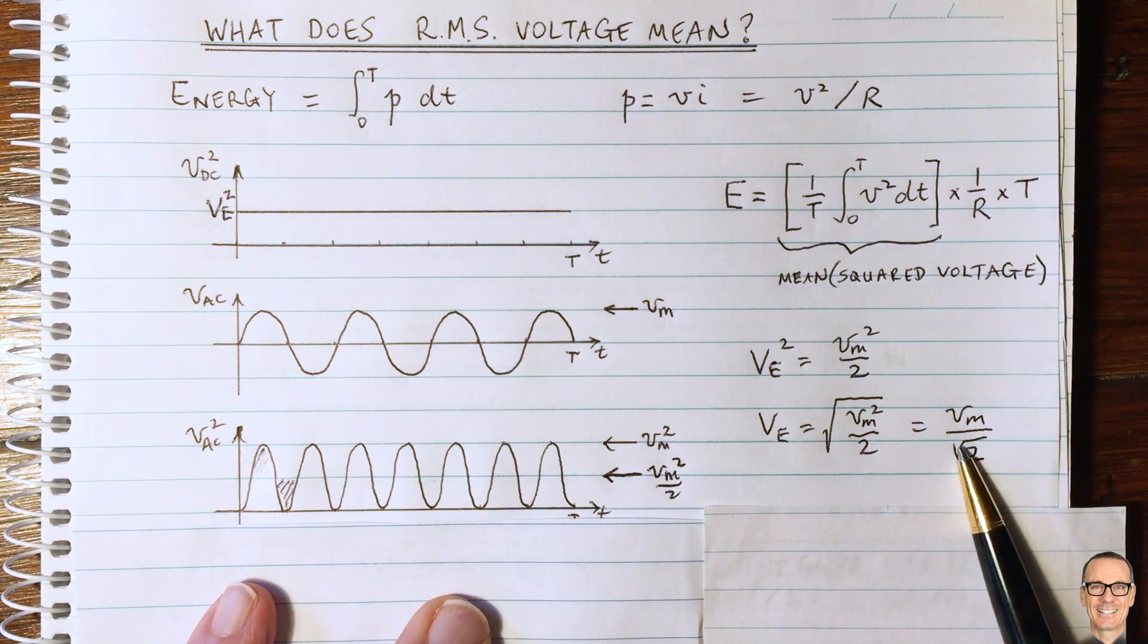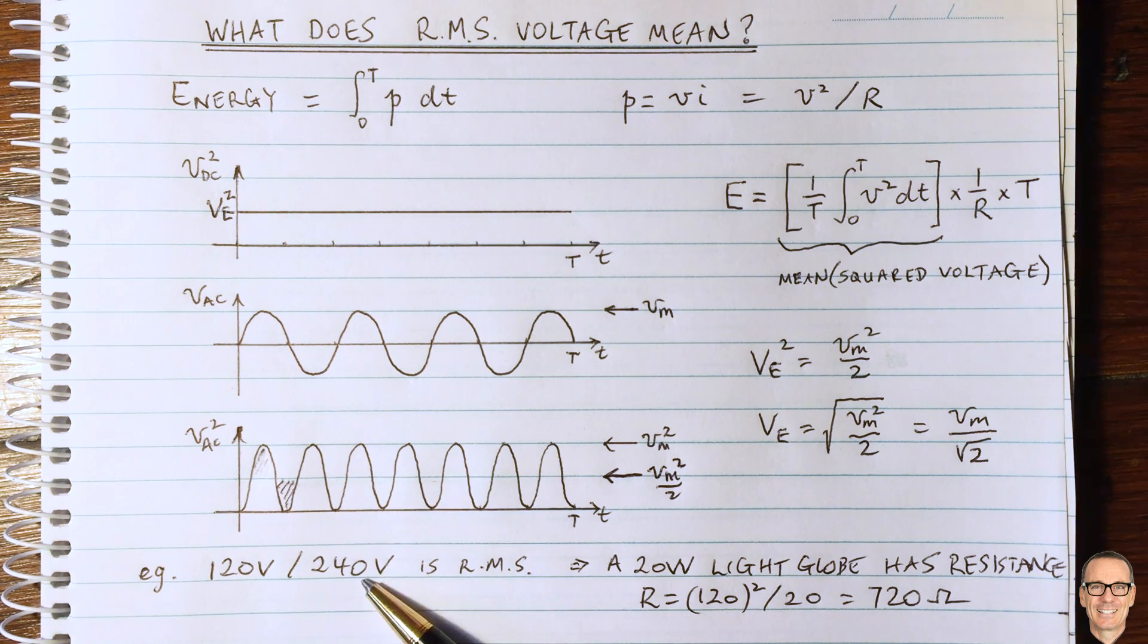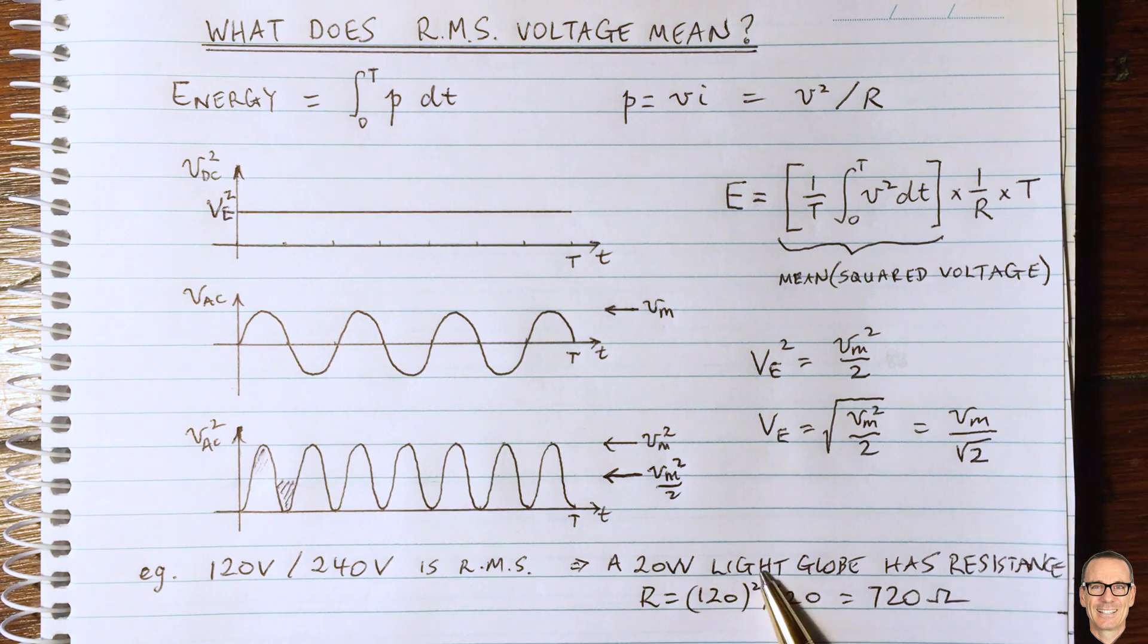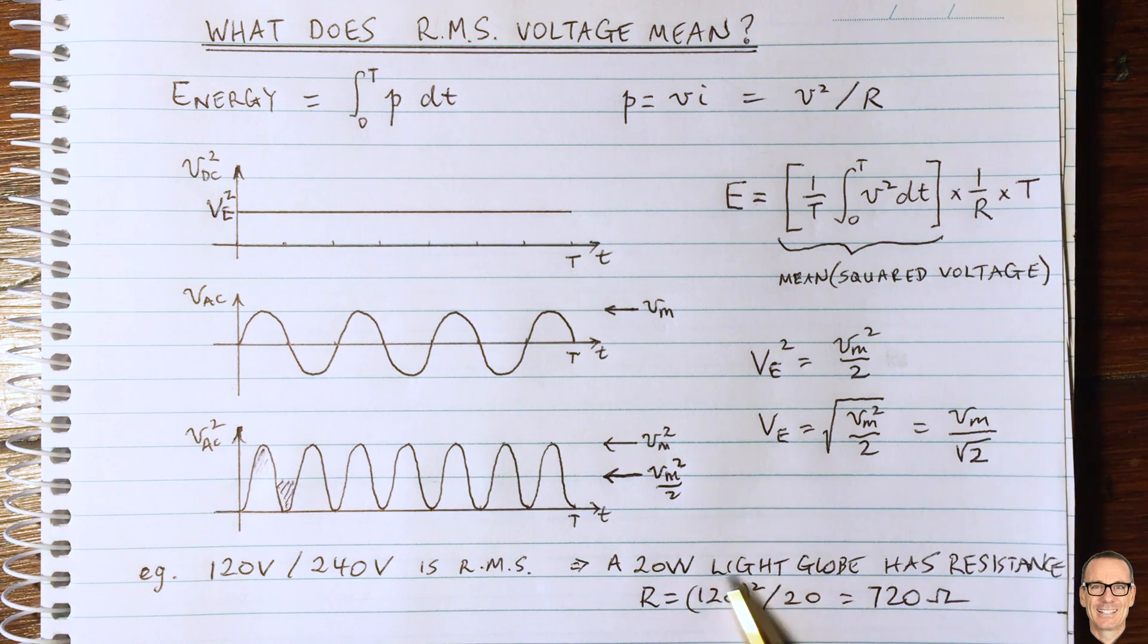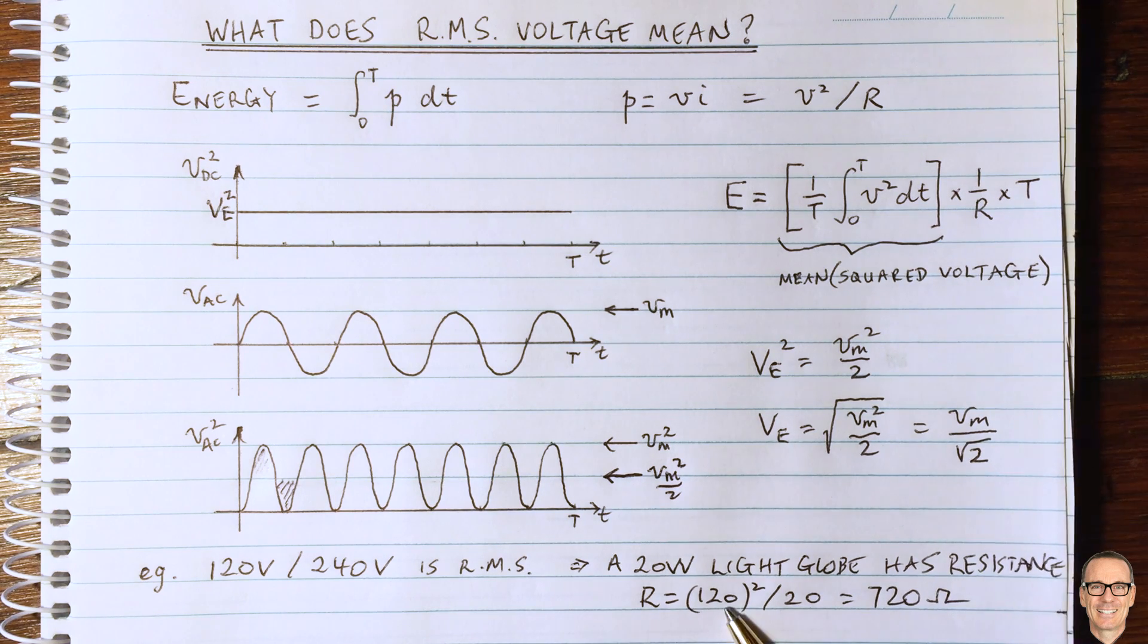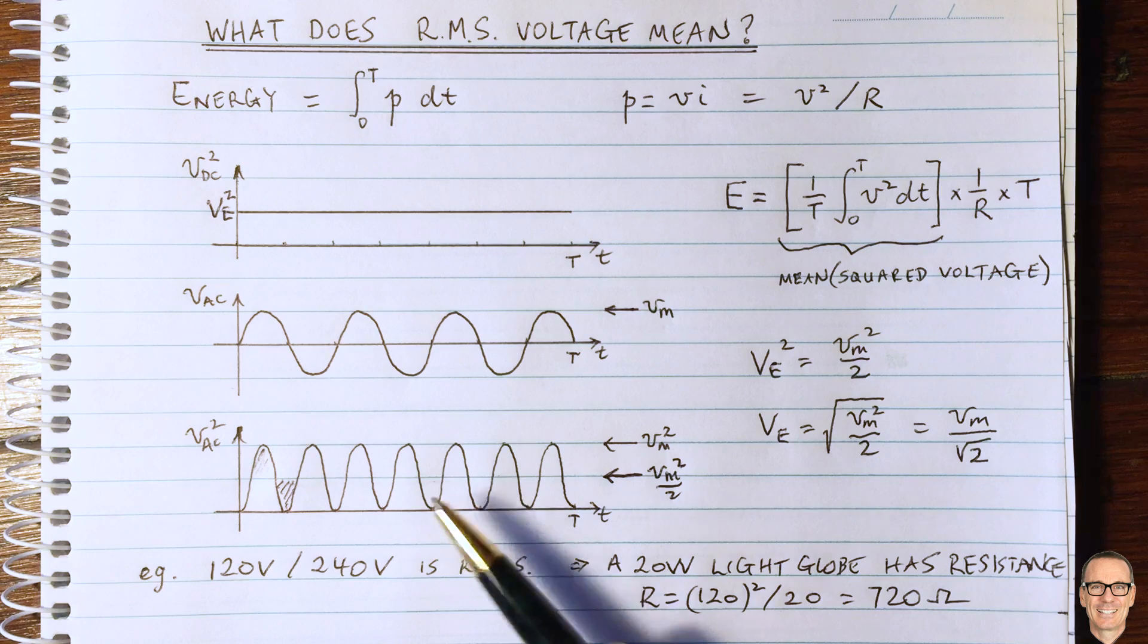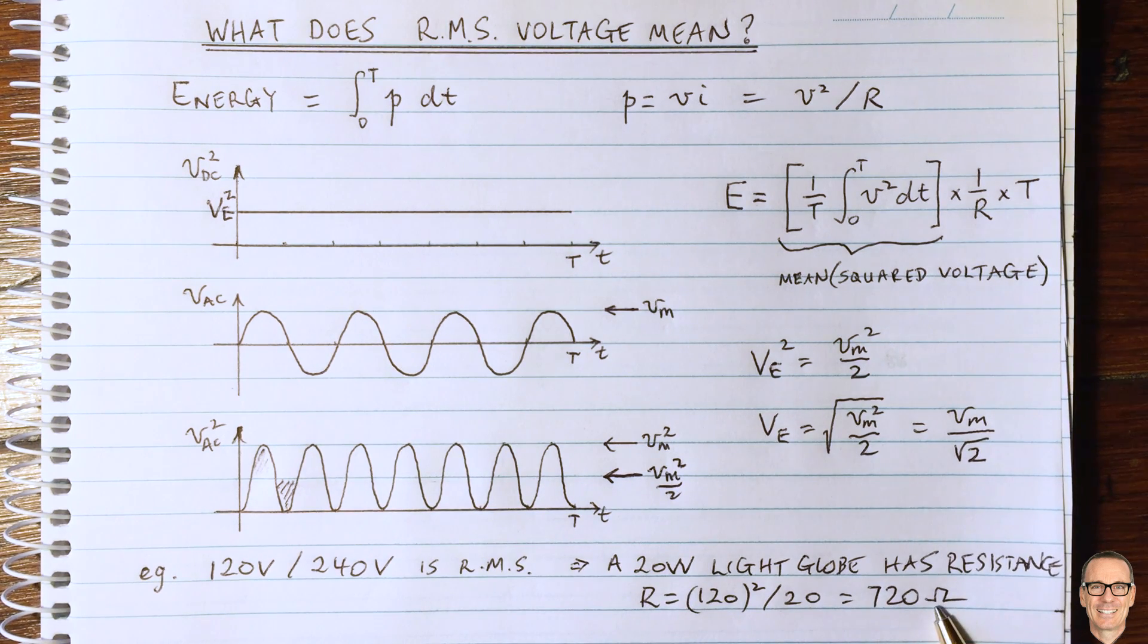So here's an example of that. For example, the 120 volts or 240 volts in some countries power supplies, those numbers are RMS values. And so, for example, if you have a 20 watt light globe and you want to find out its resistance, then you can simply use the DC equations, but using the RMS values, and you can find out the resistance, even though it's an AC power supply. So in this case, the resistance of that light globe would be 720 ohms.